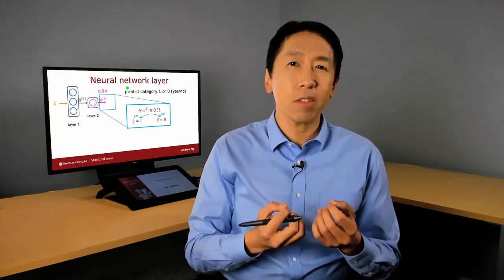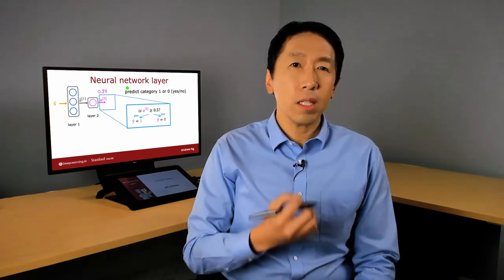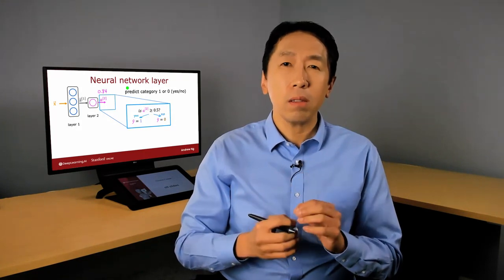If the value is greater than 0.5, you can predict y-hat equals one, and we saw this thresholding in logistic regression in the first course of the specialization. So that's how a neural network works — every layer inputs a vector of numbers, applies a bunch of logistic regression units to it, and computes another vector of numbers passed from layer to layer until you get the final output. Let's go on to look at some even more complex, larger neural network models in the next video.